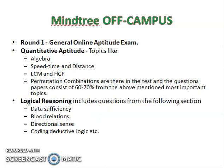Now talking about round one, which is the general online aptitude exam, in quantitative aptitude there will be topics like algebra, speed time and distance, LCM and HCF. There will be questions from permutation and combinations. The question paper consists of 60 to 70 percent from the above-mentioned most important topics, so you have to prepare these topics well.